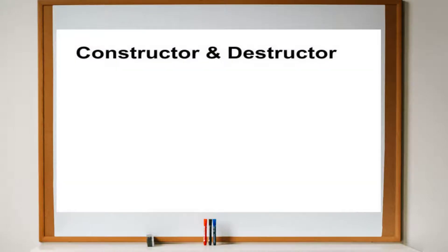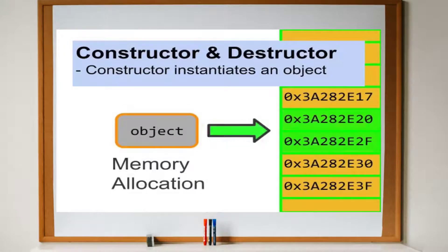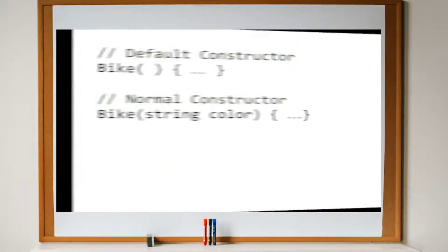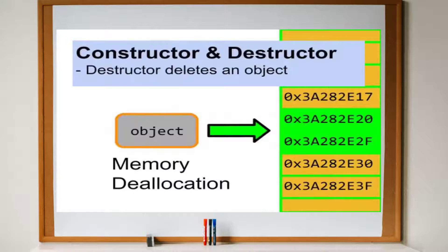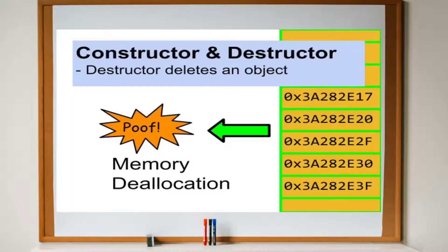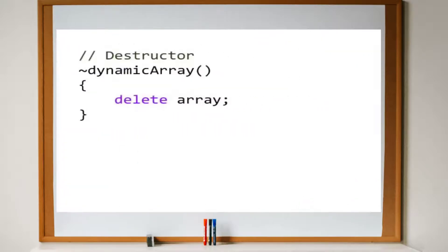In general, objects have two basic methods, the constructor and the destructor. The constructor is what instantiates the object and allocates dynamic memory as needed. A constructor that takes in parameters is called a normal constructor, while a constructor that does not is called a default constructor. The destructor is used to deallocate any dynamic memory used by the object. The destructor is called at the end of the object's lifespan, or when the program terminates.